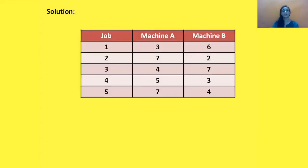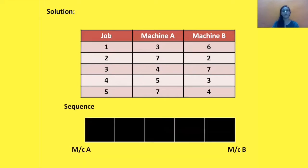To solve the sequencing of jobs, firstly we need to make a grid. Since there are five jobs, we make a grid of one by five. Machine A is placed on the left-hand side and Machine B on the right-hand side. Then we start processing the sequencing of jobs.